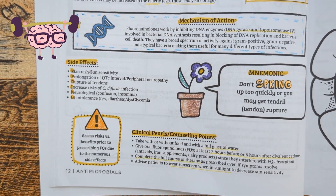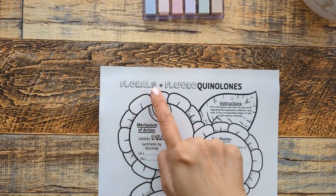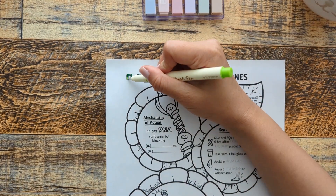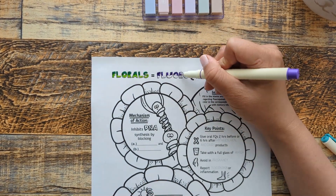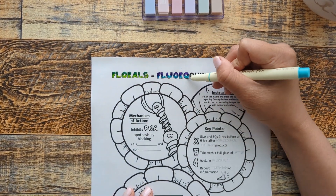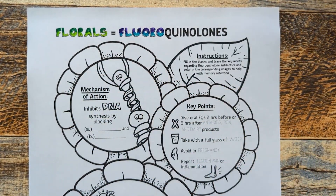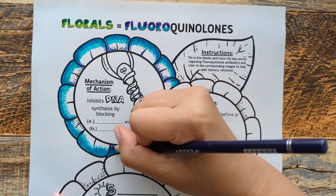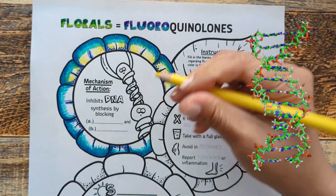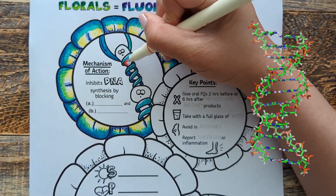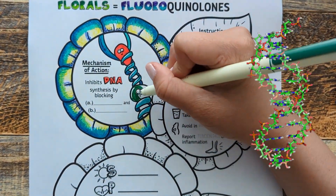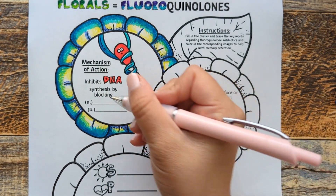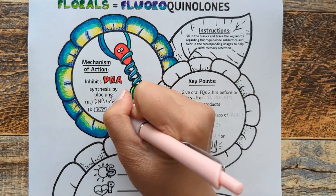Let's take a quick minute to review, because repetition is the mother of all learning. When thinking about fluoroquinolones, think florals — let's color these flowers in their key colors. For mechanism of action, let's color this in blue, because fluoroquinolones work to inhibit DNA enzymes, and remember that DNA is the blueprint of life. Specifically, fluoroquinolones inhibit bacterial DNA synthesis by blocking DNA gyrase and topoisomerase 4.